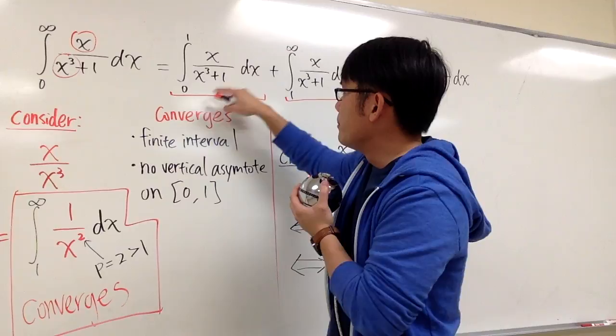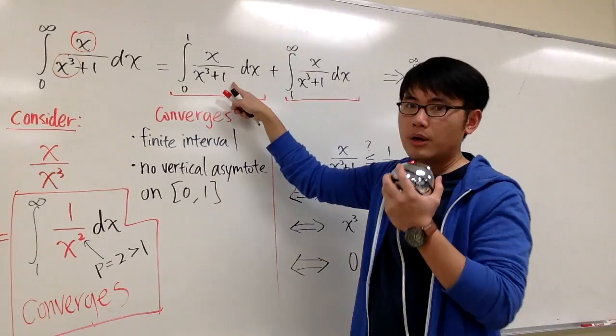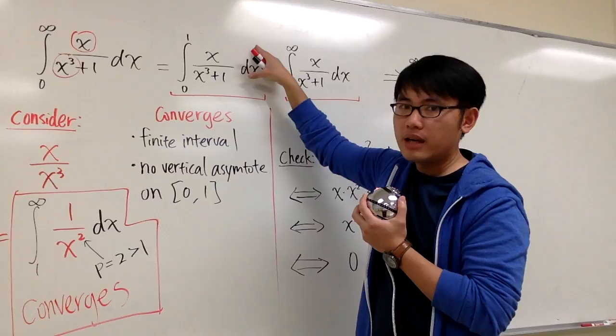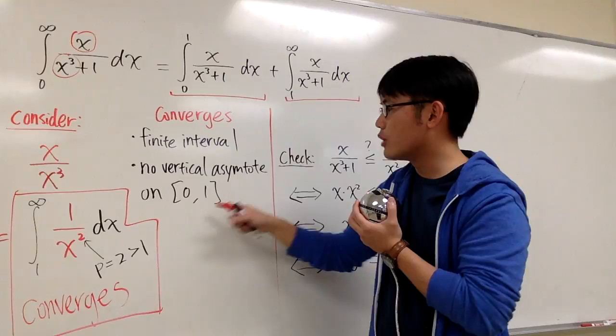For the first piece from 0 to 1, we have x over x to the third power plus 1. This is a finite interval, and the vertical asymptote only happens when x is negative 1, which is outside this interval. So this is a well-behaved integral guaranteed to give a finite area — it's convergent because we have a finite interval and no vertical asymptote.